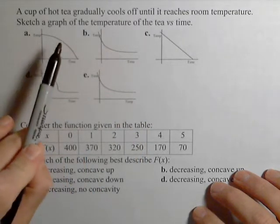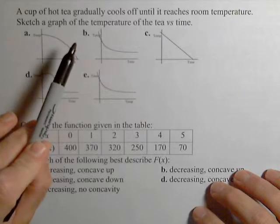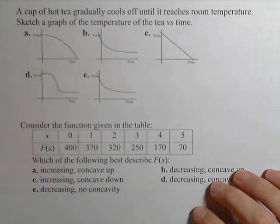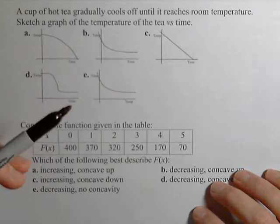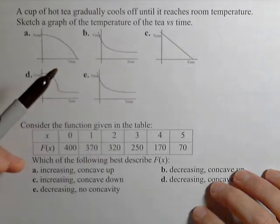So we want to plot tea versus time. As time goes up, the temperature cools off, and then it reaches room temperature. So let's talk about these graphs.